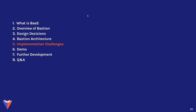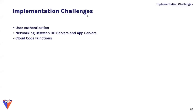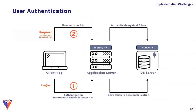Throughout building Bastion, prominent challenges included handling user authentication, getting database servers and application servers to communicate, and implementing cloud code functions. For authentication, we wanted each user's data to be secure and accessible only to authenticated users. We decided to use session cookies — when a user logs in, they receive a cookie stored in the browser, and the server creates a session token in the database. When a request arrives, the cookie is authenticated against the token in the session store; if there's a match, the session is valid and the server returns the requested resource.